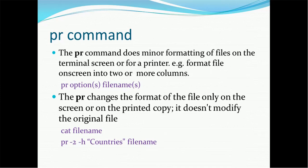The PR command changes the format of the file only on the screen and not on the existing or original file. So the format is only changed on the screen, or if you send that formatted file to the printer, then it will be formatted. There are two locations — either the screen or the printer — where you will see the formatted file, but the original file will not be modified. For example, the command is: PR hyphen 2 for how many columns, hyphen H for heading — in this case 'countries' — and then the file name.